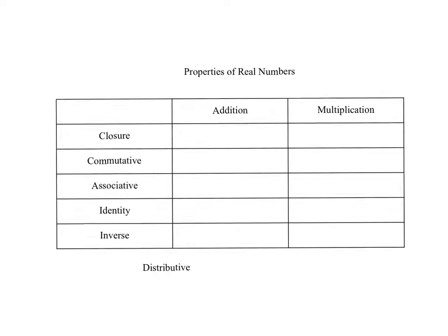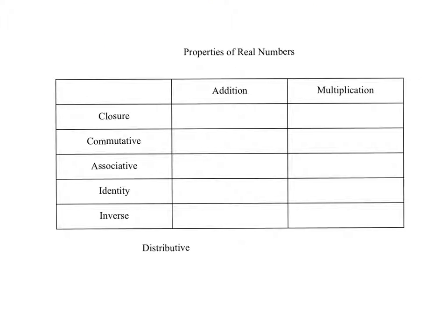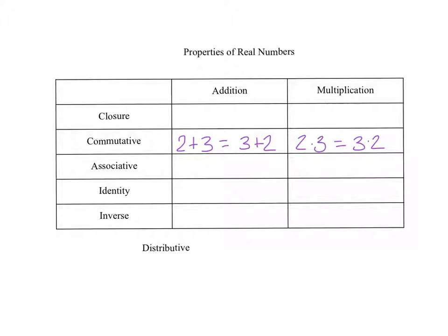The other thing we need to talk about in this lesson are properties. You've done properties many times over in elementary and middle school. Let's start with the commutative property. The commutative property of addition is: if you take two real numbers and add them together, it's the same as if you change the order. Commutative means you can change the order of anything and get the same answer — commute means to move. Multiplication is the same thing: 2 times 3 is the same as 3 times 2.